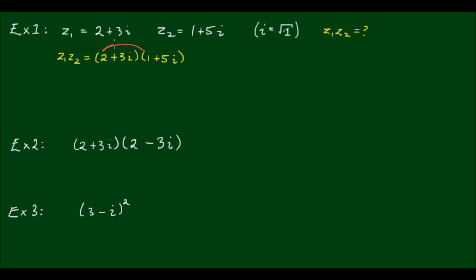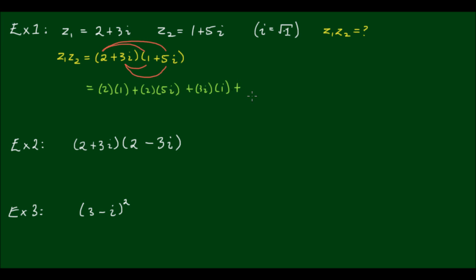My high school math teacher liked to call this the moon method, because the lines that I'm drawing in red somewhat resemble a crescent-shaped moon, if you can use your imagination. If we carry out the process, we will get 2 times 1, plus 2 times 5i, plus 3i times 1, plus 3i times 5i.